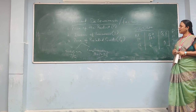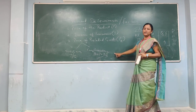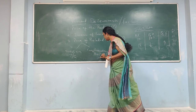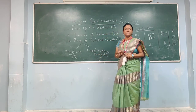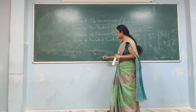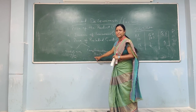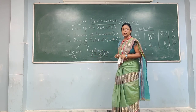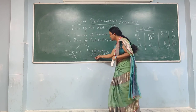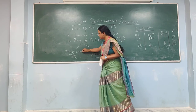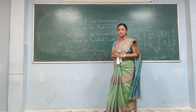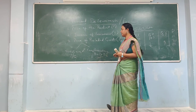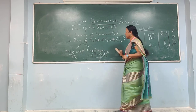In complementary goods, if the price of petrol is increasing, the quantity demanded for bikes will decrease. There is a negative relationship in complementary goods. In substitute goods it is always a positive relationship, but in complementary goods it is always a negative relationship. That is your price of related goods.